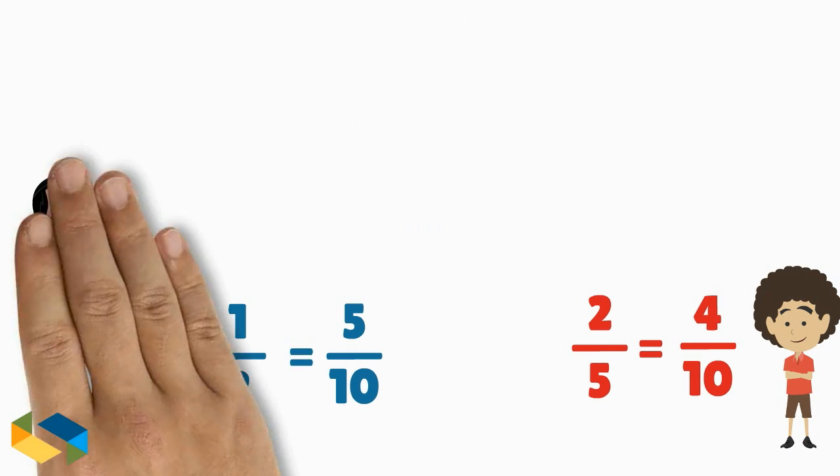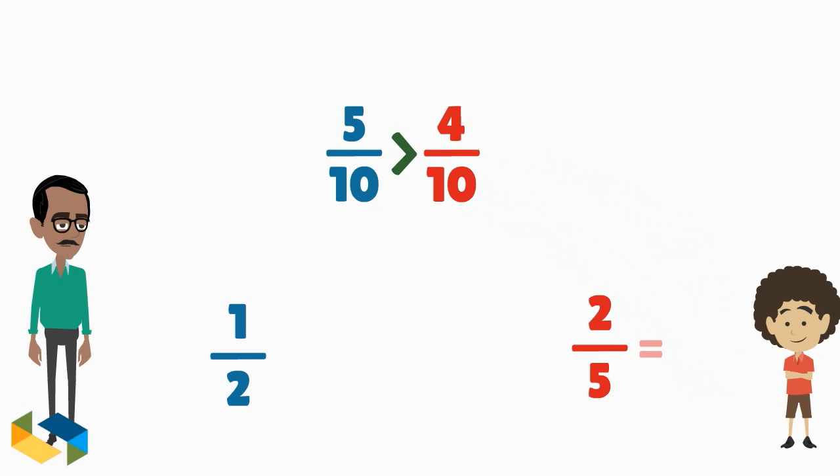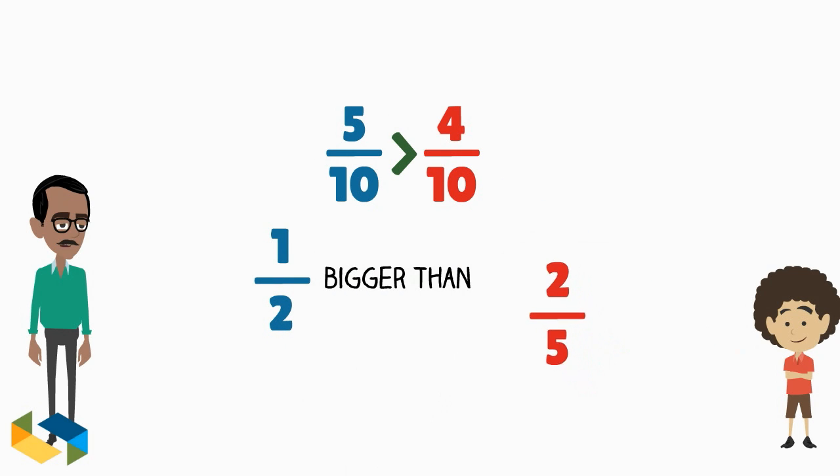Correct, Sam, you have your answer already. Since 5 here is greater than 4, the fraction 5 upon 10 is also greater than 4 upon 10. As a result, the fraction 1 upon 2 is bigger than 2 upon 5.